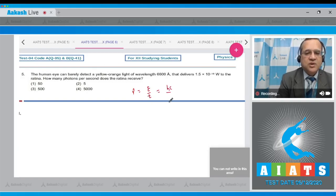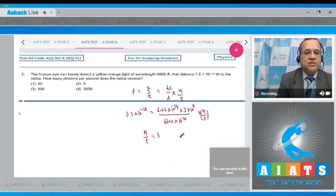Energy equals hc by lambda into the number of photons per unit time, so n by t you have to determine. Power is given 1.5 times 10 to power minus 18, that should equal h is 6.62 times 10 to power minus 34, c is 3 times 10 to power 8, and lambda is given 6600 times 10 to power minus 10, times n by t. Solve this equation - n by t comes to be 5, so 5 photons per second. Therefore the correct option is answer number 2.